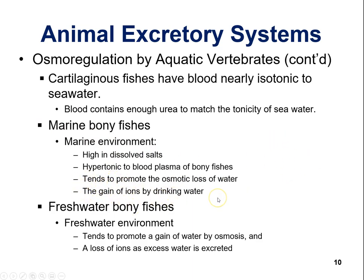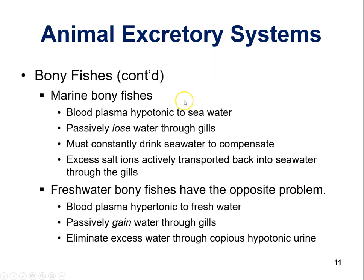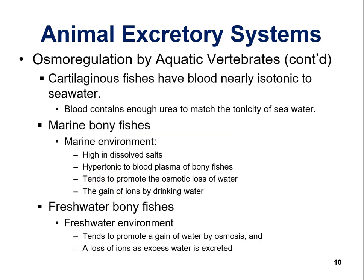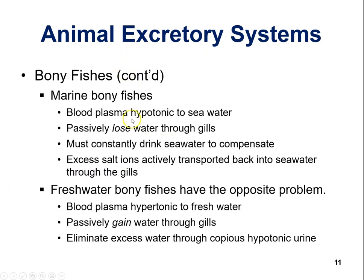For freshwater bony fish, because the blood is more hypertonic than the outside water, water moves in. There's a loss of ions as excess water is excreted. For marine bony fishes, blood plasma is hypotonic to seawater — they passively lose water through the gills and must constantly drink seawater to compensate for that osmotic loss.